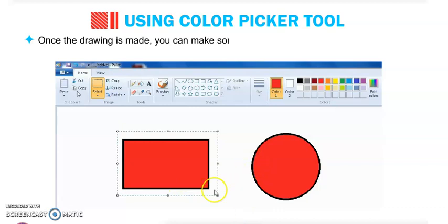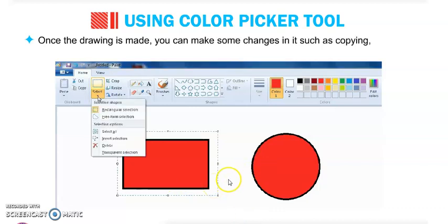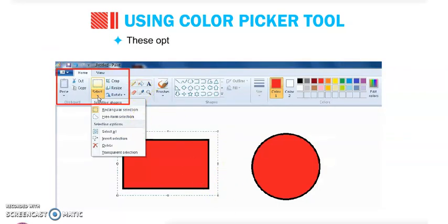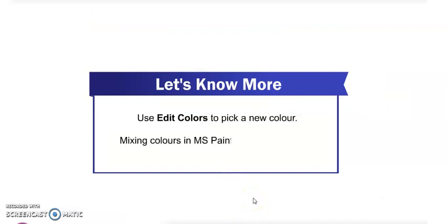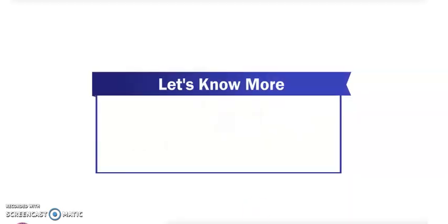Once the drawing is made, you can make changes such as copying, deleting, moving, etc. These options are available on the Home tab. You can also edit colors to pick a new color — we call this mixing colors in MS Paint. You can choose the exact color you want and mix two or three colors to make new colors using the edit colors box.